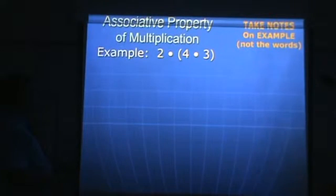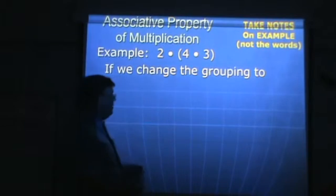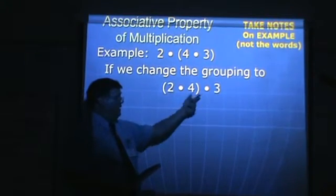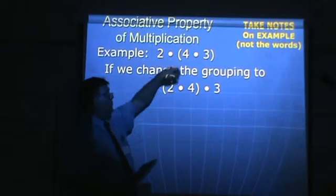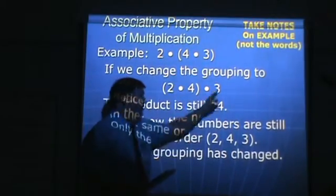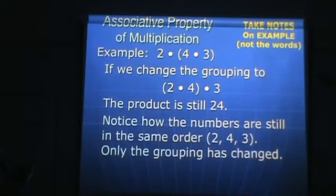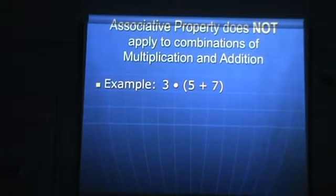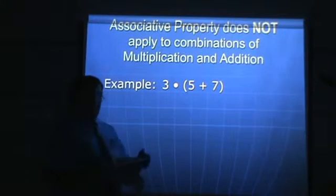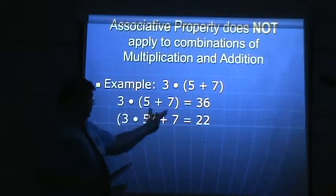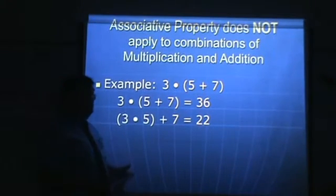Here's an example of the multiplication side. I have 2 times the quantity 4 times 3 grouped. If I change the grouping to 2 times 4: 2 times 4 is 8, times 3 is 24. If I do 4 times 3, I get 12, times 2 is 24 — either way. Notice how the order 2, 4, 3 stayed the same; what changed was what was inside those grouping symbols. The associative property does not apply to combinations of multiplying and adding. Although multiplication is associative and addition is commutative, the combination is not — I cannot change the grouping to 3 times 5 first versus 5 plus 7 first; it would not give the same result.